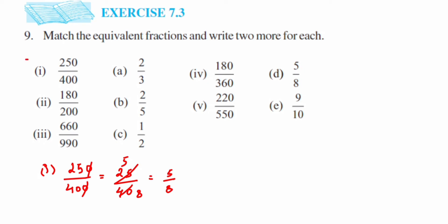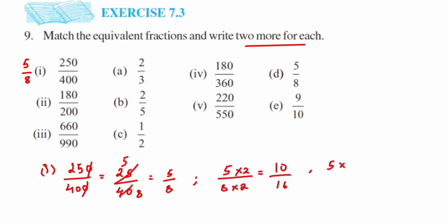Now we're going to find two equivalent fractions for 5/8. Equivalent fractions are obtained by multiplying or dividing numerator and denominator by the same number. Multiplying by 2 gives 10 upon 16. Multiplying numerator and denominator by 3 gives 15 upon 24. So these are the two equivalent fractions of 5/8.